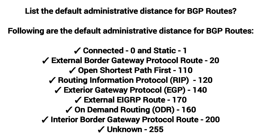List the default administrative distances for BGP routes. Connected: 0, Static: 1, External BGP (EBGP): 20, OSPF: 110, RIP: 120, EGP: 140, External EIGRP: 170, On-Demand Routing (ODR): 160, Internal BGP (IBGP): 200, Unknown: 255.